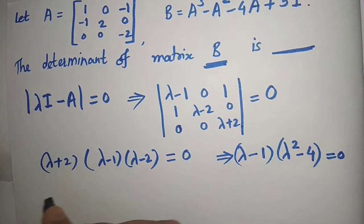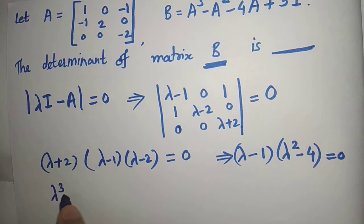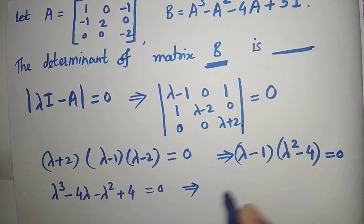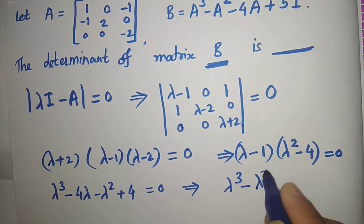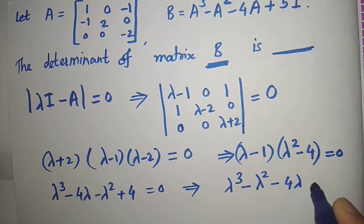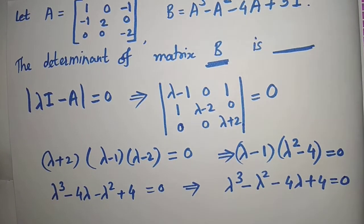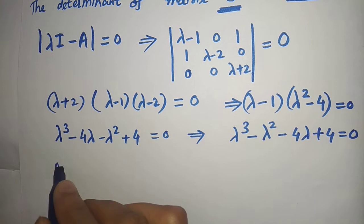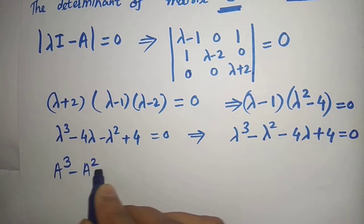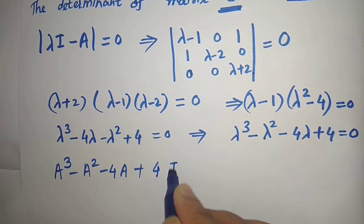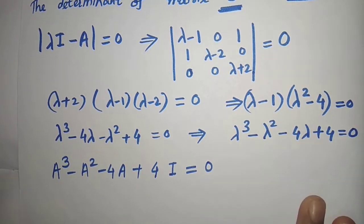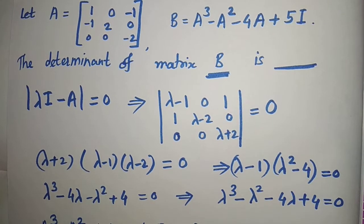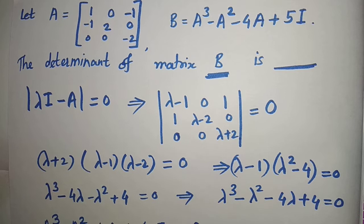Expanding further, we get λ³ - 4λ - λ² + 4 = 0, which simplifies to λ³ - λ² - 4λ + 4 = 0. By Cayley-Hamilton theorem, the matrix A satisfies this polynomial, so A³ - A² - 4A + 4I = 0.